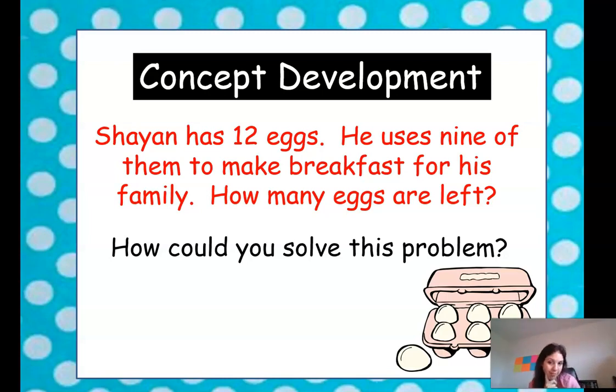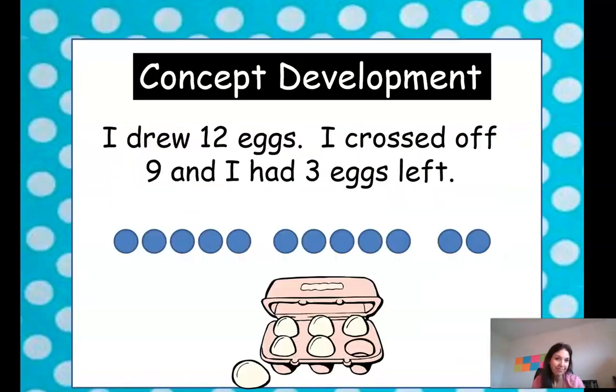Could you draw a picture? So I drew 5 and 5. That equals 10 and 2 more. So I drew 12 eggs. And then we're going to cross off 9 of them because he used 9 eggs. How many are left? 1, 2, 3. He has 3 eggs left.